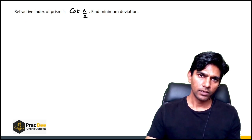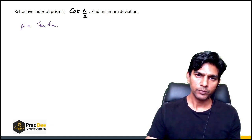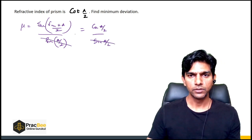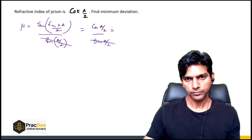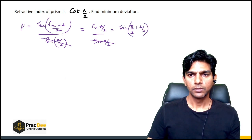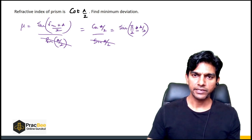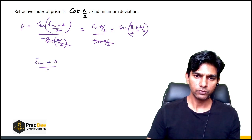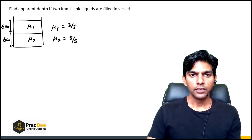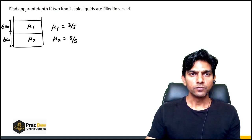Next: the refractive index of a prism is cot(A/2). Find the minimum deviation. Using the formula μ = sin[(δ_min + A)/2] / sin(A/2), we have cot(A/2) = cos(A/2)/sin(A/2). So sin[(δ_min + A)/2] = cos(A/2) = sin(π/2 − A/2). Therefore (δ_min + A)/2 = π/2 − A/2, which gives δ_min = π − 2A. A straightforward question we have covered many times.